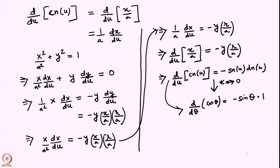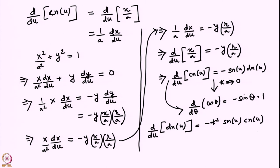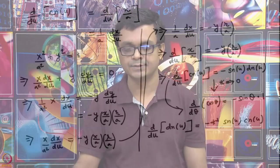Similarly, you can get more derivatives. For example, d/du of DN(u) = −k²·SN(u)·CN(u). This is consistent in the limit of k going to 0 because DN(u) just goes to 1, a constant. So d/dθ of a constant is 0, and the right-hand side also goes to 0 because k goes to 0. You can try to prove this on your own.